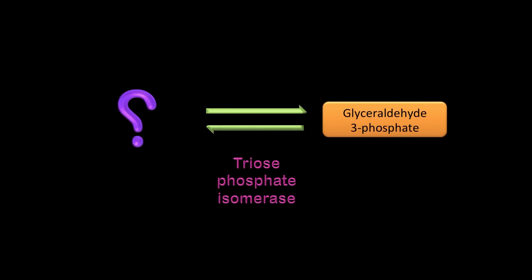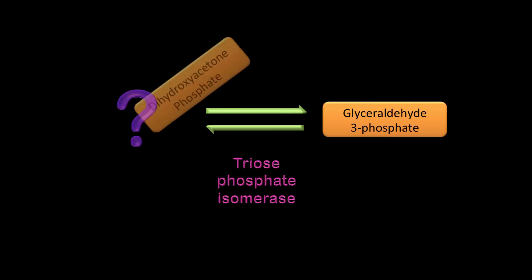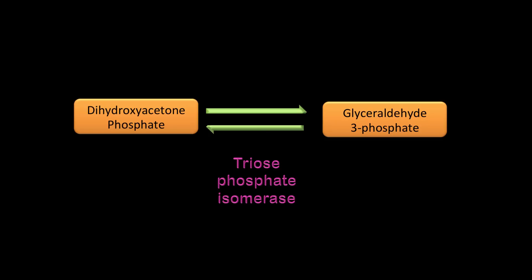Triose phosphate isomerase has glyceraldehyde-3-phosphate as its product. What is the substrate? You should have said DHAP or dihydroxyacetone phosphate. When aldolase cleaved fructose-1,6-bisphosphate, it produced glyceraldehyde-3-phosphate and dihydroxyacetone phosphate. DHAP does not continue in glycolysis directly; it is converted to glyceraldehyde-3-phosphate, giving you two molecules of glyceraldehyde-3-phosphate that continue in the second phase of glycolysis.